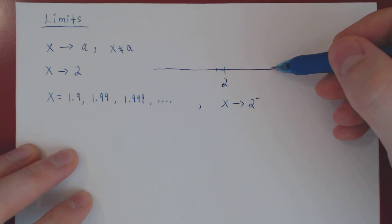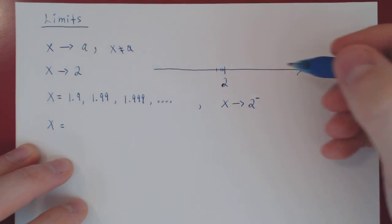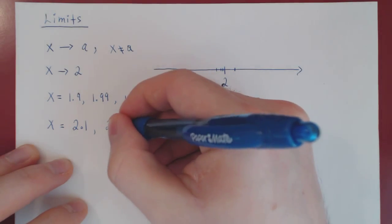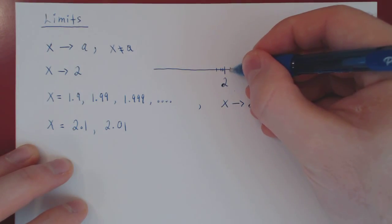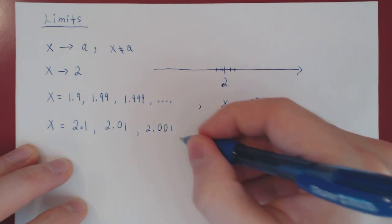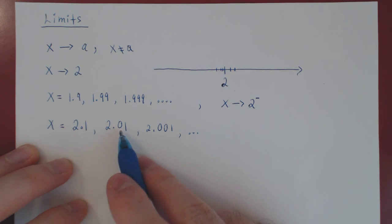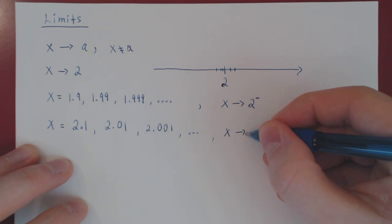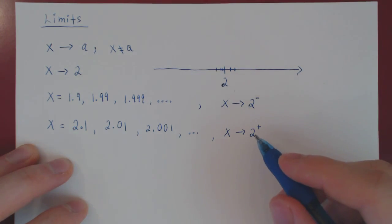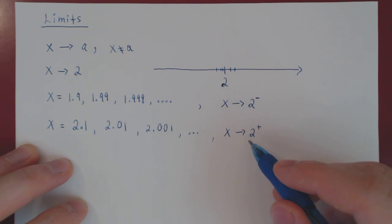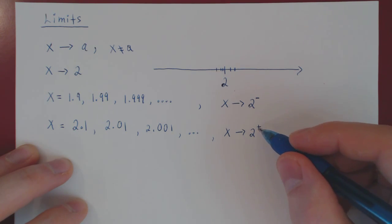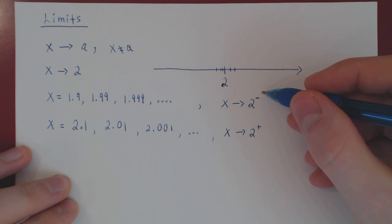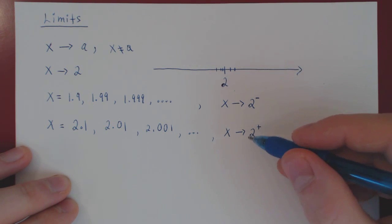On the other hand, we could be approaching 2 from the right — getting closer and closer to 2, but always a little bigger. So x could be 2.1, then 2.01, then 2.001, and so forth. We write x approaching 2 with a positive in the exponent to signify x is taking on values getting closer and closer to 2, always a little bigger than 2. The first is called the left-hand limit or left-sided limit; the second is called the right-hand limit or right-sided limit.